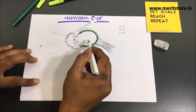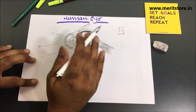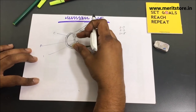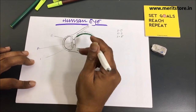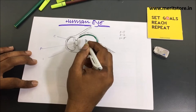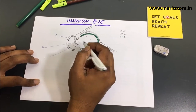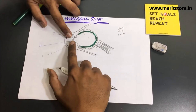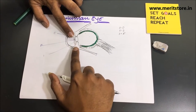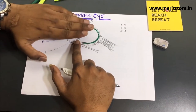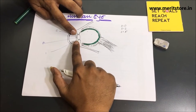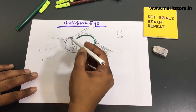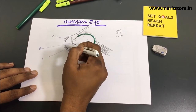The pupil contracts when there is too much light, and dilates when there is insufficient light. The tendency of the pupil to dilate as well as to contract and adjust itself is called adaptation. The iris opens up if there is less light so that more light can enter, and closes up if there is more light. The cornea forms a transparent bulge on the surface of the eyeball.